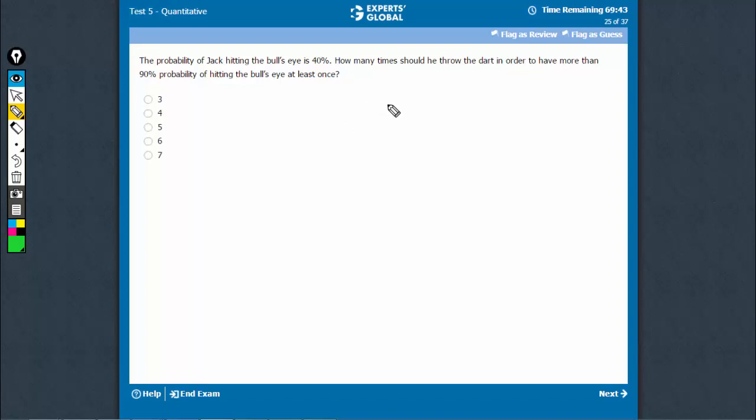If he hits, the probability is 40%. In this question where you have to find at least once, find the probability of his not being able to hit.